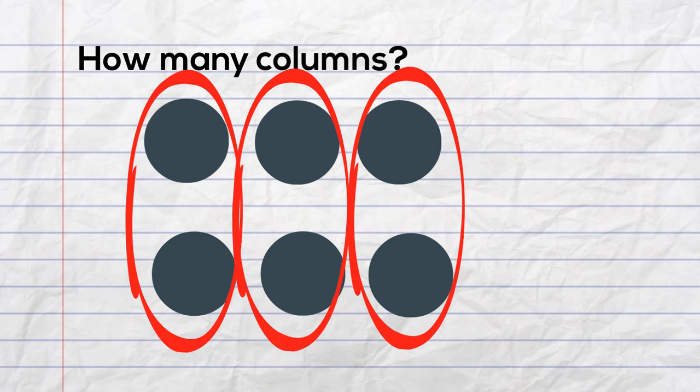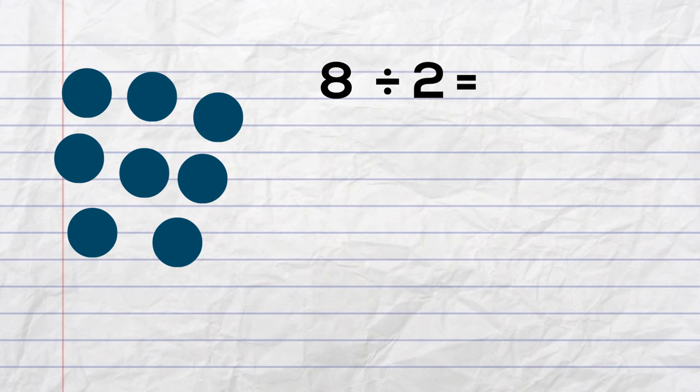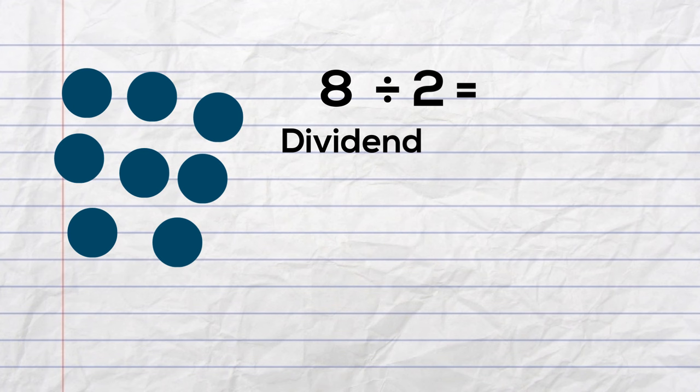First, we know the difference between a row and a column. Here's our first question: eight divided by two. When you divide, you're basically figuring out how many groups you are dividing a number into. The eight is called your dividend and that is your total number of objects. The two is a divisor and tells you how many will be in each group.